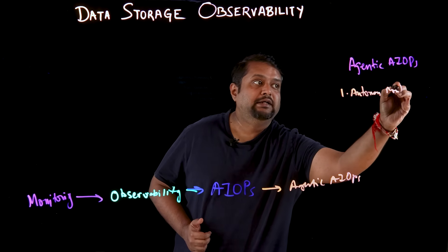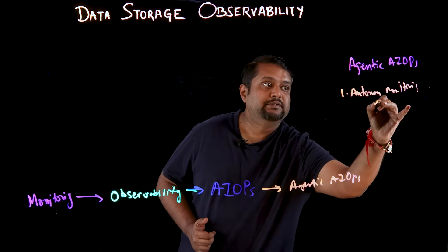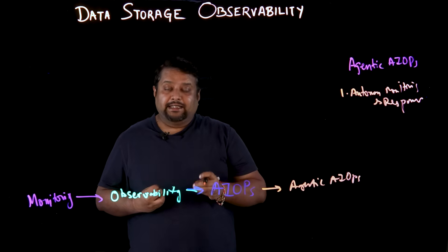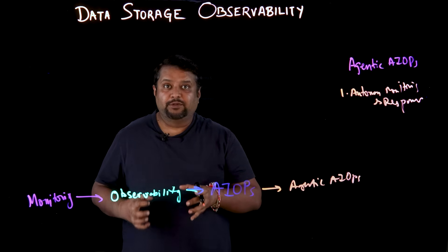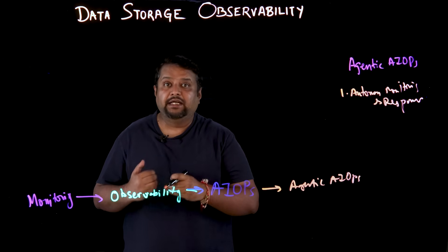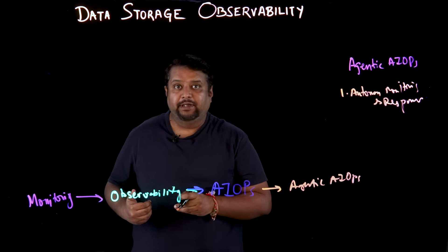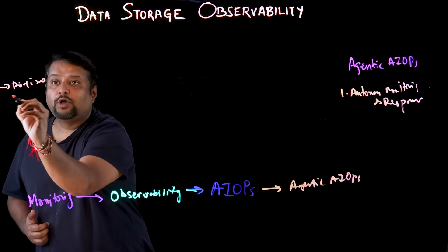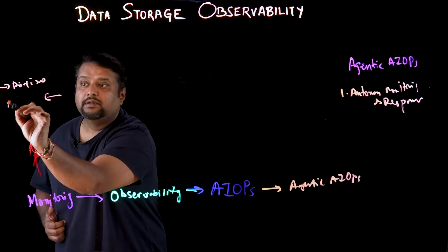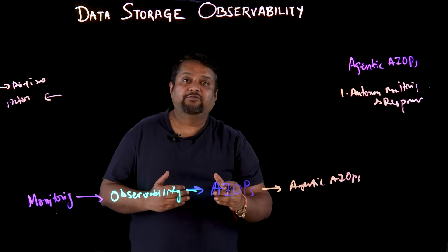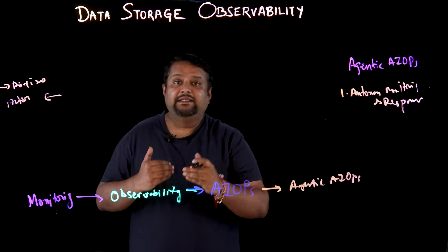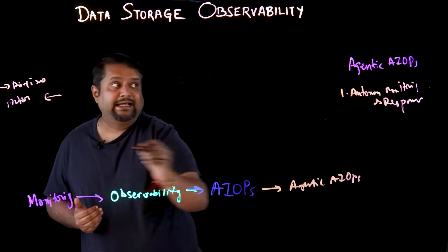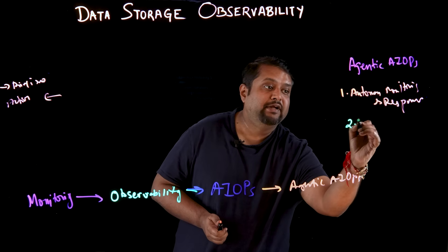With autonomous monitoring and response, based on the data that the observability tool is getting from the storage, it can start responding in real time to the storage admin. For example, if a message comes in that a drive is not available, the system can — in a chatbot-like manner — provide an immediate response and recommended action, making the storage admin's life a lot easier.